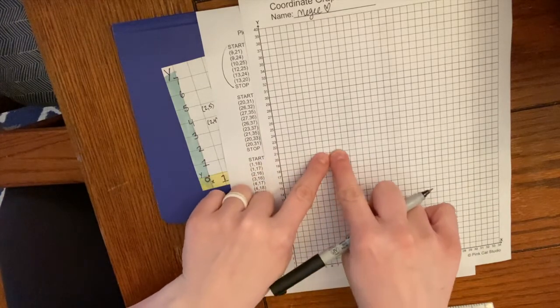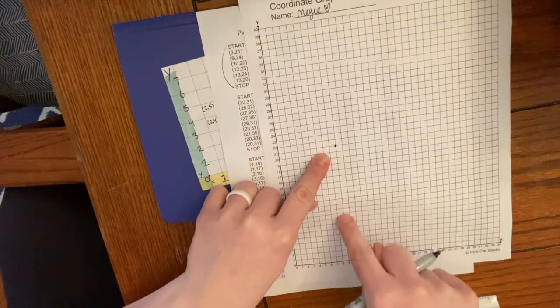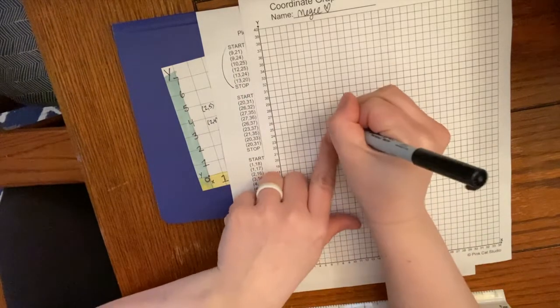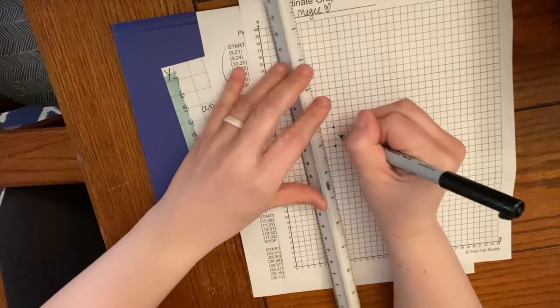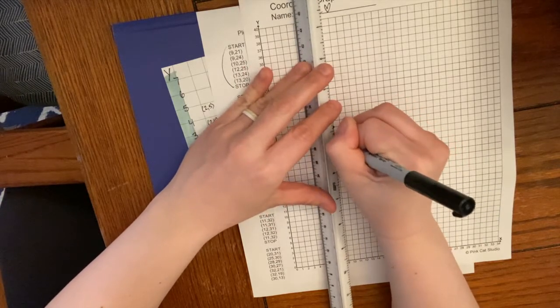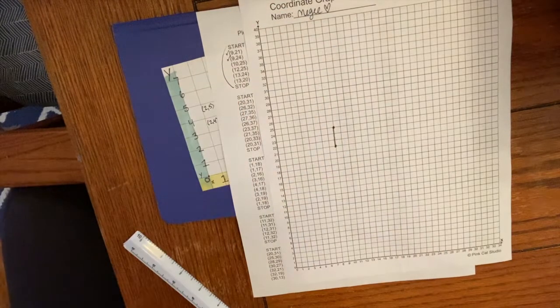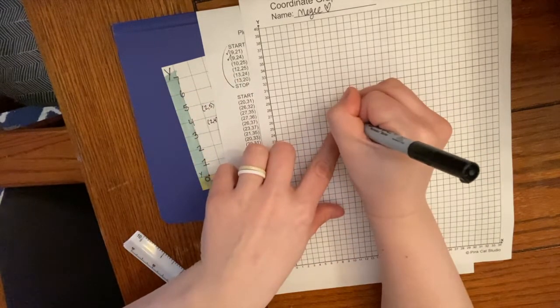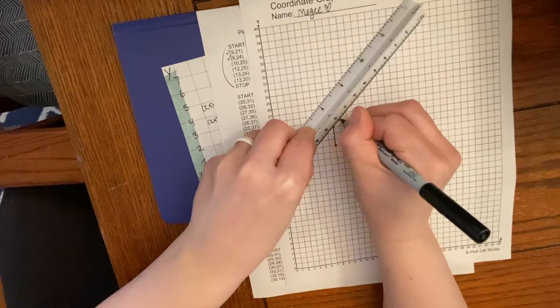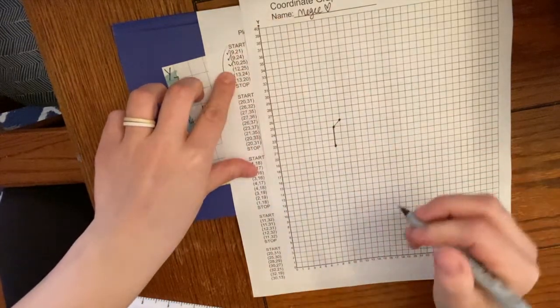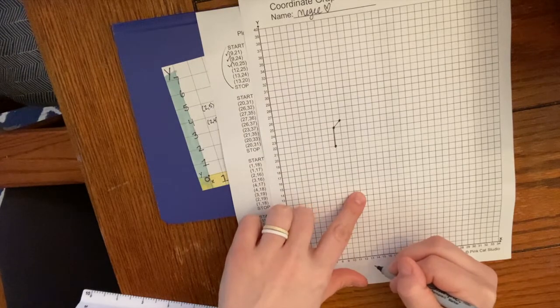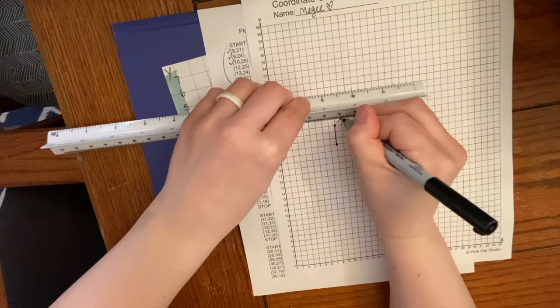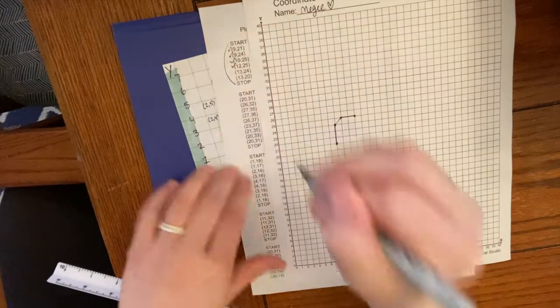Let's make sure I did that right. Yeah, 9 and 21. Then I have to go to 9 and 24, and I'm going to draw a line. I need to do this so I can keep track. 10 and 25, right here. 12 and 25.